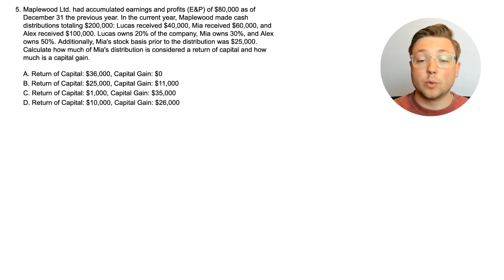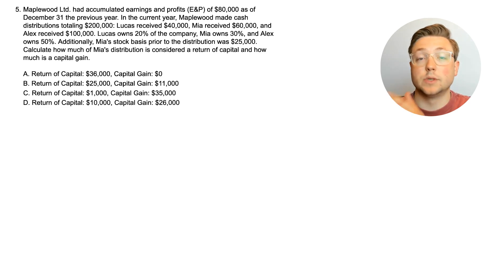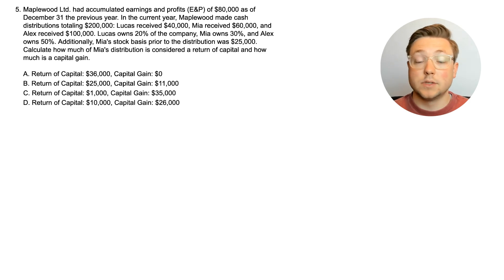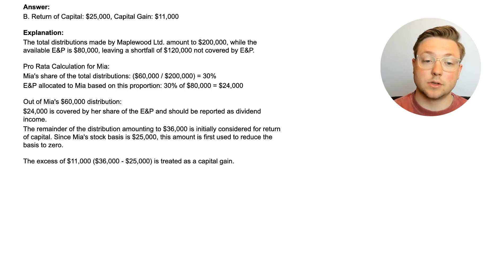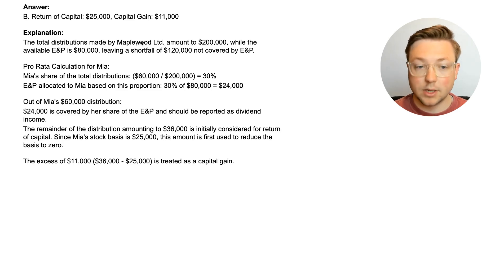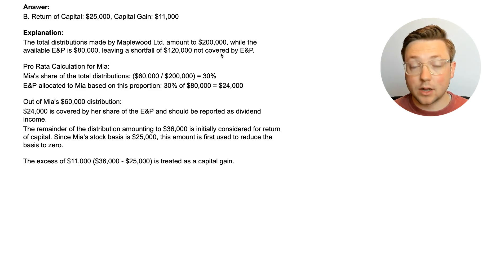This is the first time we're dealing with multiple specific shareholders receiving distributions in different amounts, so this could be a little tricky. The answer is Mia would have a return of capital of $25,000 and a capital gain of $11,000. The total distribution by Maplewood LTD amounts to $200,000, while the available E&P is $80,000, leaving a shortfall of $120,000 not covered by E&P.